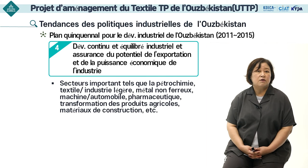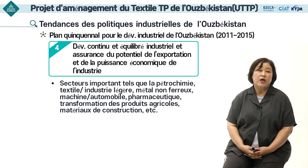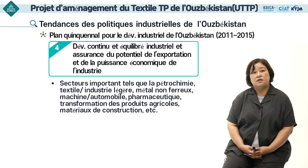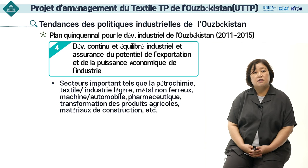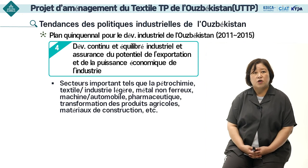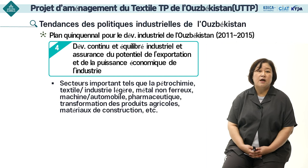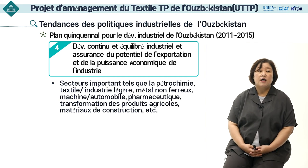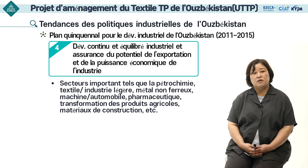De nombreux efforts sont déployés afin de soutenir le développement équilibré de l'industrie et d'assurer le potentiel d'exportation et la compétitivité industrielle. L'État soutient intensément les principales industries telles que la production d'électricité, la pétrochimie, la chimie, le textile, l'industrie légère, le métal non ferreux, la machinerie, la production automobile, la médecine, la transformation des produits agricoles et la production de matériaux de construction.